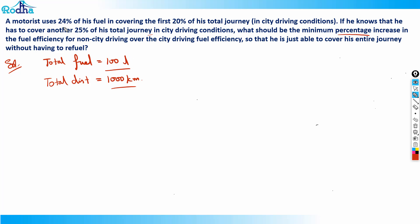Total fuel is 100 liters, total distance is 1000 kilometers. The problem says he uses 24% of his fuel covering the first 20% of the journey. That means out of 1000 km, the first 20% is 200 kilometers, and he uses 24% of fuel — that is 24 liters.